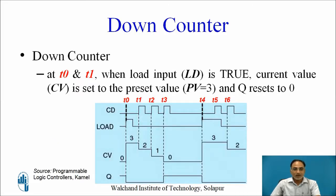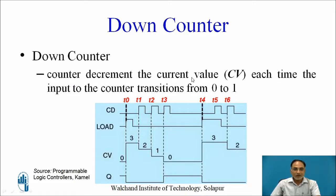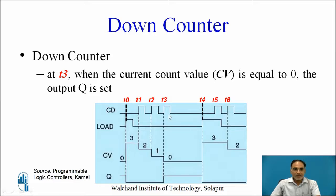Let us understand the down counter with the help of a waveform. At T0 and T1, the load signal is true, so the current value CV is set to the preset value — CV is set to 3 and Q resets to 0. The counter decrements the current value each time the input transitions from 0 to 1. At T1, T2, T3 the counter is decrementing each time, and at T3 when the current value equals 0, the output Q is set.